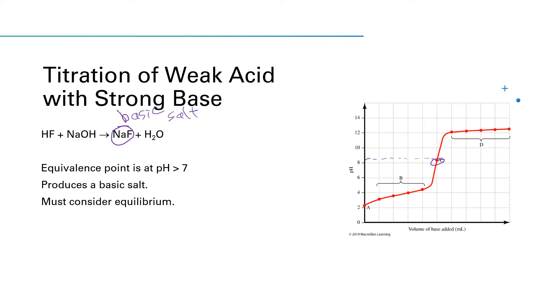And the reason that the pH gets elevated above 7 is that that salt sets up an equilibrium. So the fluoride ion will react with water in that hydrolysis reaction to produce HF and OH minus. And so those OH minus ions that are liberated make the equivalence point here a little bit basic.